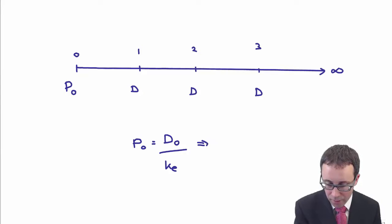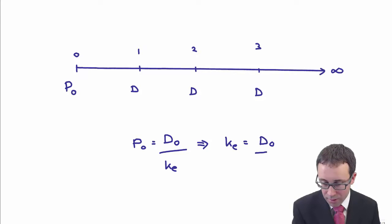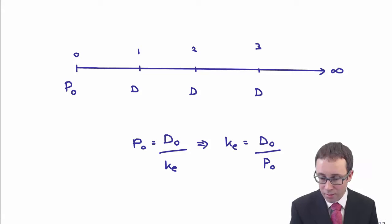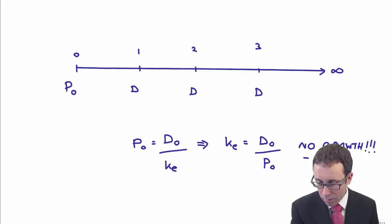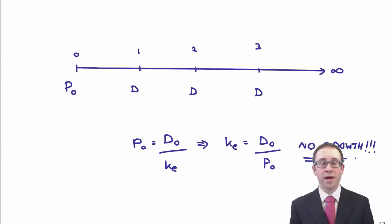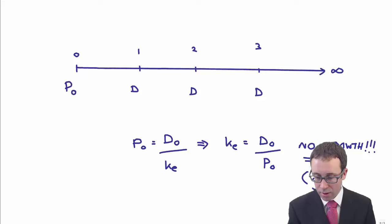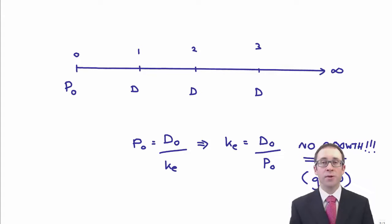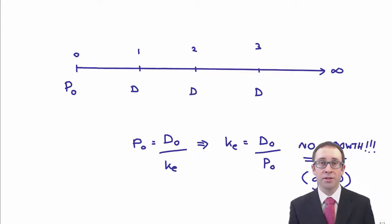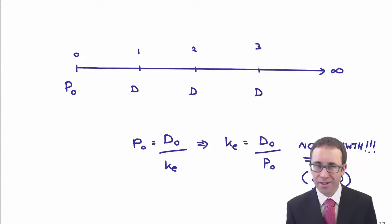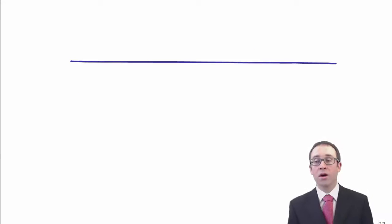We can then rearrange that formula. So KE is equal to D0 divided by P0. But the assumption there is that there is no growth, so G is equal to 0. The cost of equity for a business whereby it pays constant annual dividends with no growth is simply: take the dividend and divide it by the price.